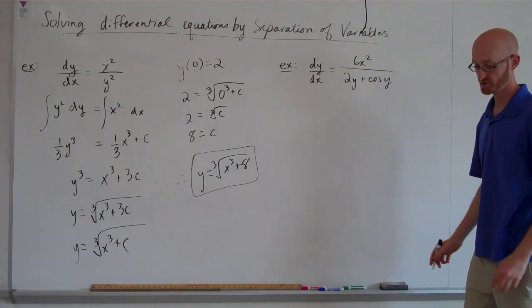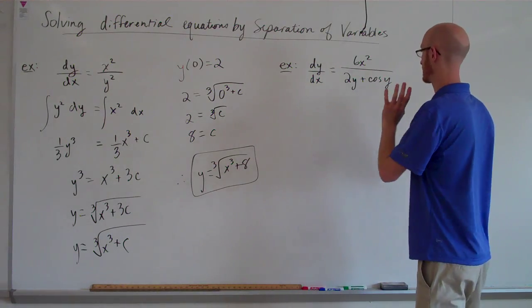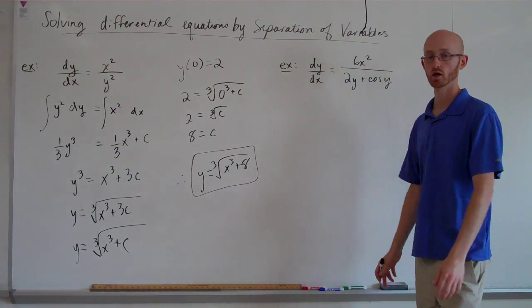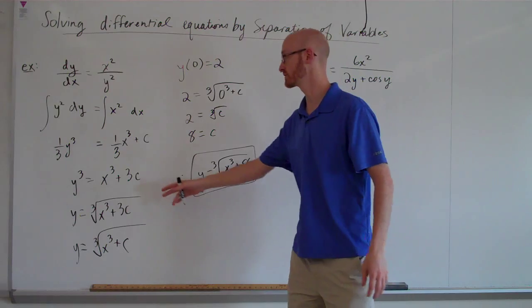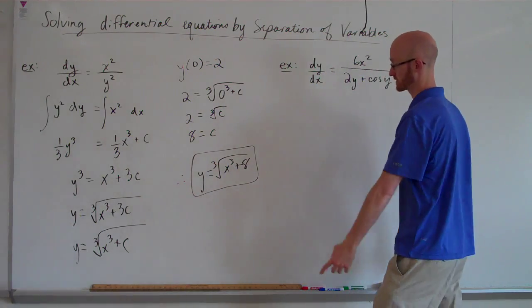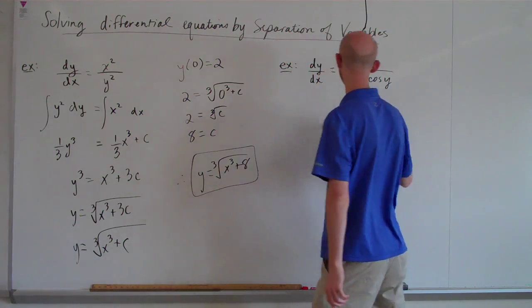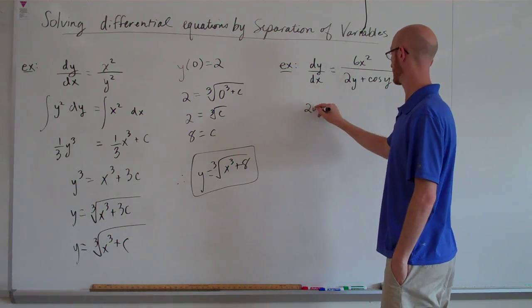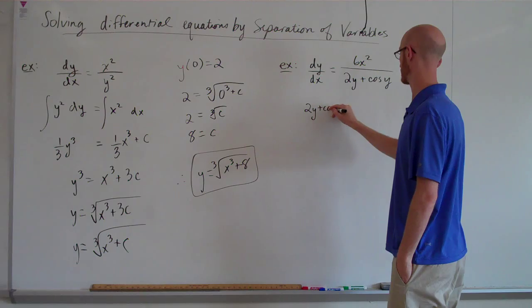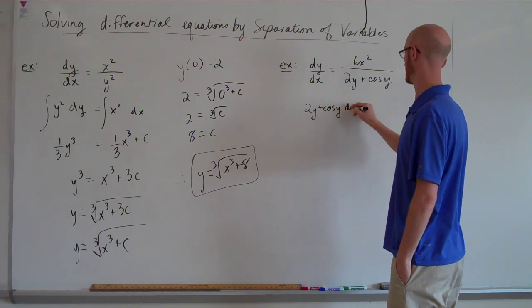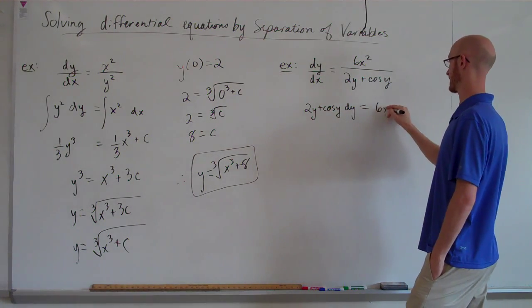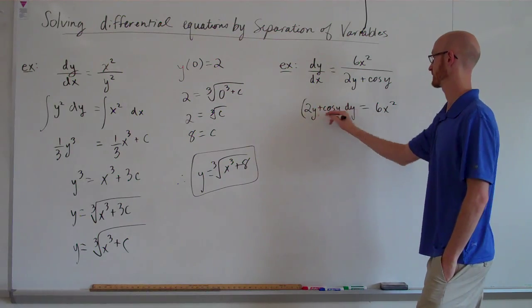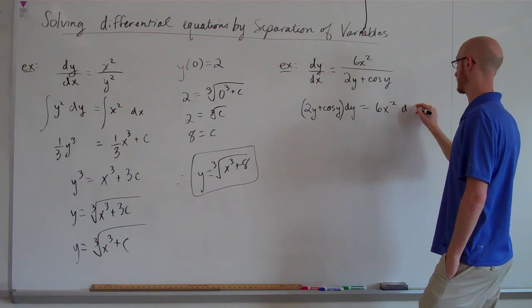In this example, we'll employ a very similar technique. We're just going to solve for a general or a family of solutions to the differential equation, kind of like we did right there. We will multiply and get 2y plus cos y dy equals 6x squared dx.